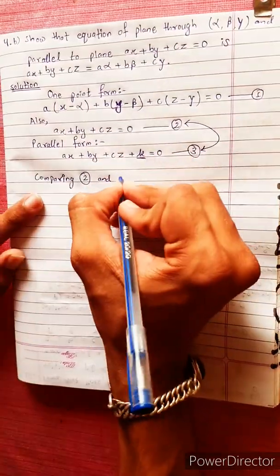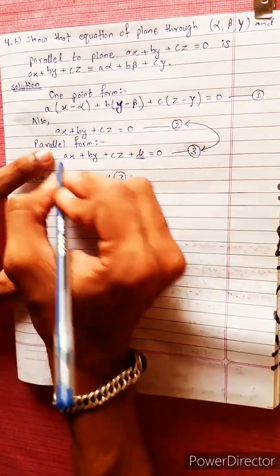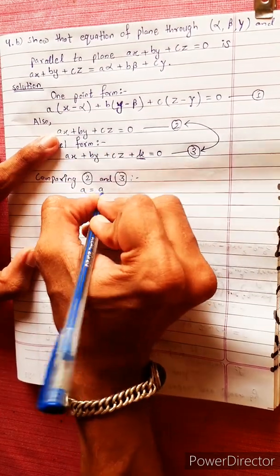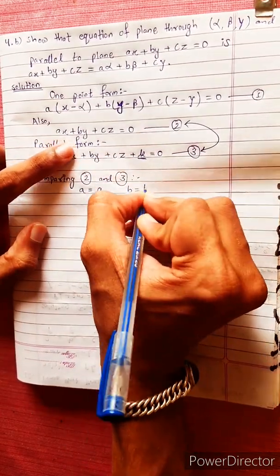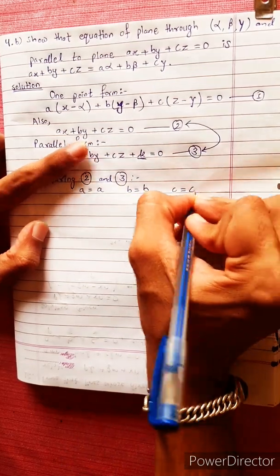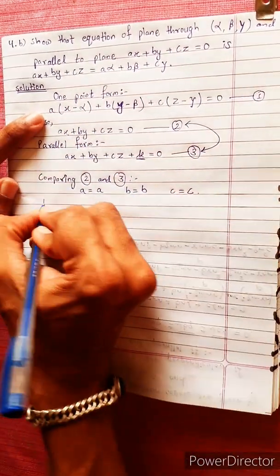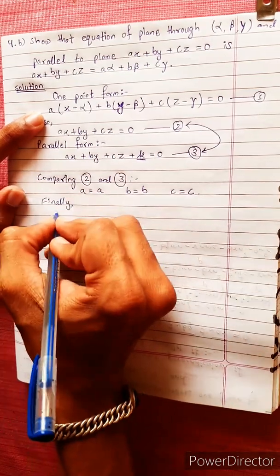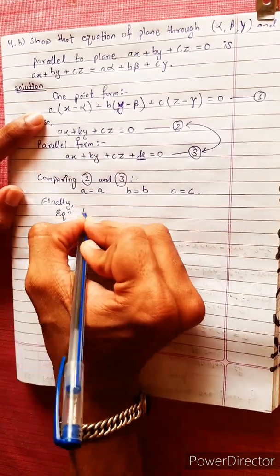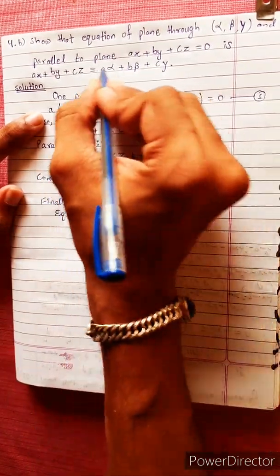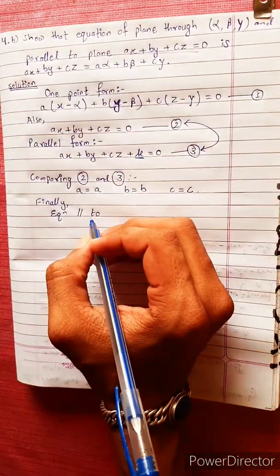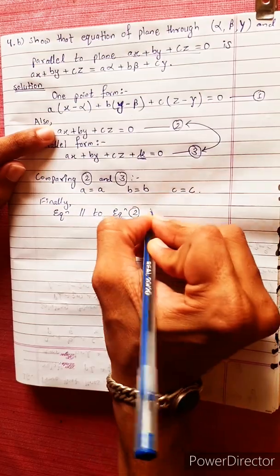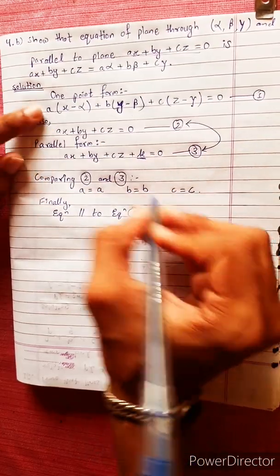Comparing equations 2 and 3, we will see the direction ratios of A, B, and C. The direction ratio of B and C are consistent. Finally, the equation is parallel to the other equation.